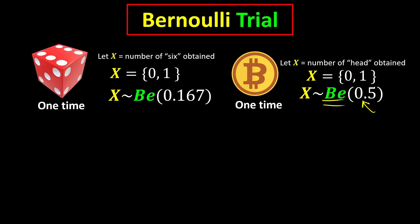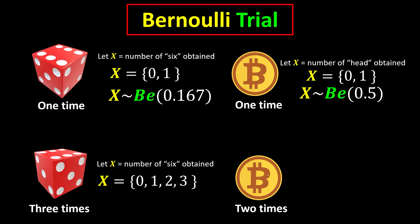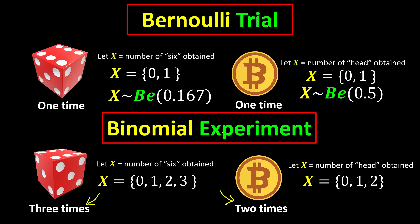Now, what if we roll the dice three times? We use the same variable x to represent the number of sixes we can obtain. Since we're rolling three times, the maximum number of sixes is three, and we might get two, one, or zero. Similarly, if we toss the coin twice, we might get a maximum of two heads and a minimum of zero. When the number of observations is more than one — rolling the dice three times or tossing the coin twice — this is what we call a binomial experiment.